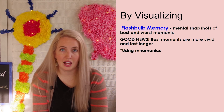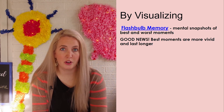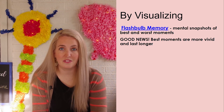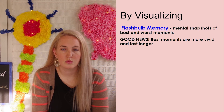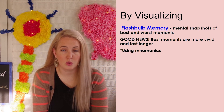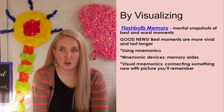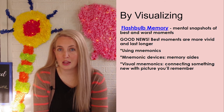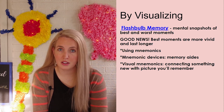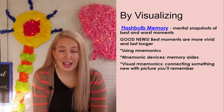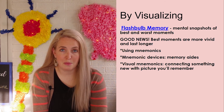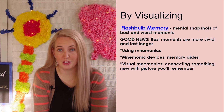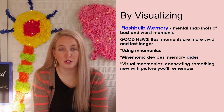Other ways we can use visualization include flashbulb memories, where we take mental snapshots of our best and worst moments — this happens fairly automatically. If you ask someone where they were on 9/11, or a grandparent where they were when Kennedy was shot, they'll likely remember many specific details because that is a flashbulb memory. We can also use mnemonics or mnemonic devices — memory aids where we essentially turn information into a picture we'll be more likely to remember, such as imagining a hippo walking around campus to remember that the hippocampus is responsible for memory.